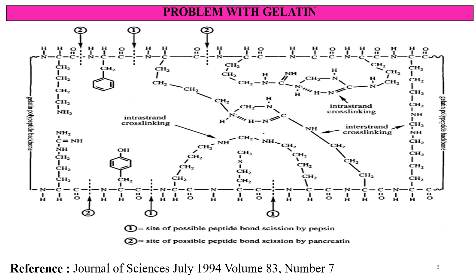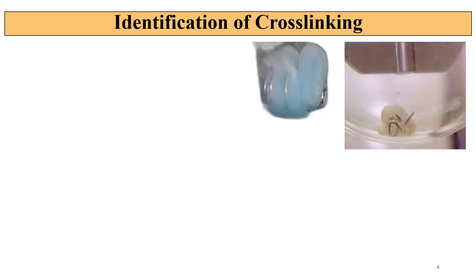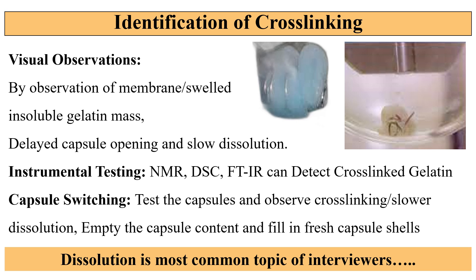The main concern with gelatin is that crosslinking causes a membrane-like structure to form. Here is the membrane-like structure, which is insoluble — also called pellicles. Due to pellicles, the dissolution rate gets slower. Crosslinking can be identified through visual observations by observing the membrane or swelled insoluble gelatin mass, delayed capsule opening, and slow dissolution.